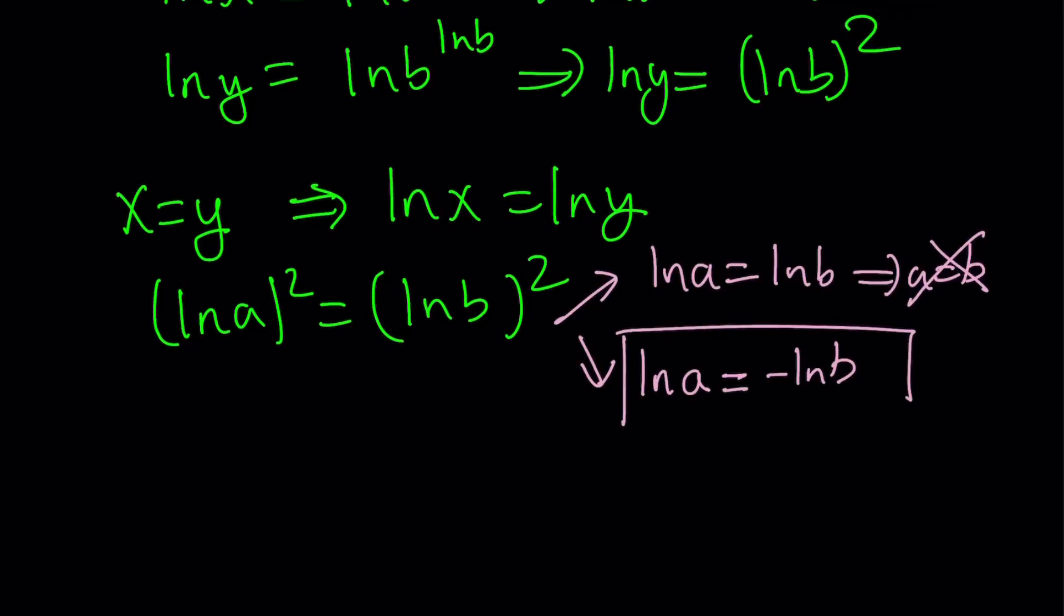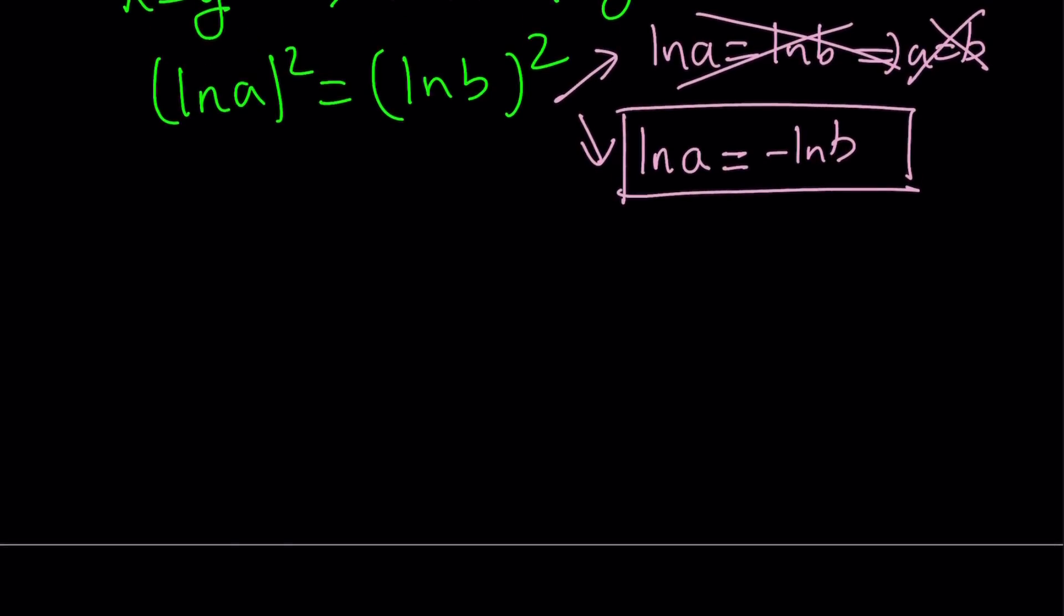Okay. Now, so we're going to go with this, because that's the only thing we have. This one is gone. So this is kind of interesting, don't you think? ln a is equal to negative ln b. Let's go ahead and explore further.